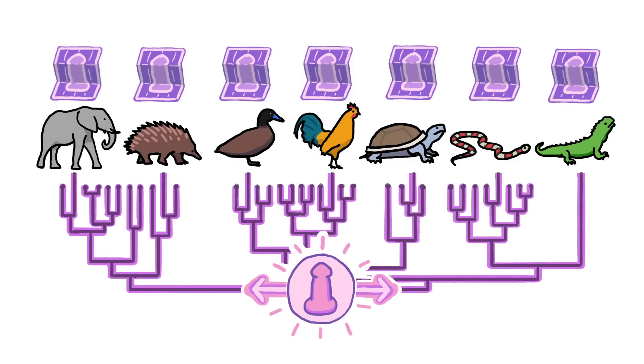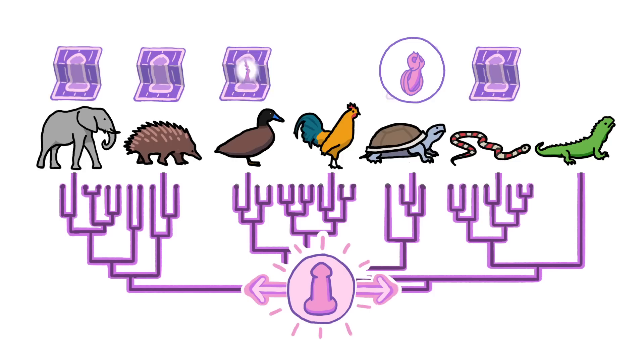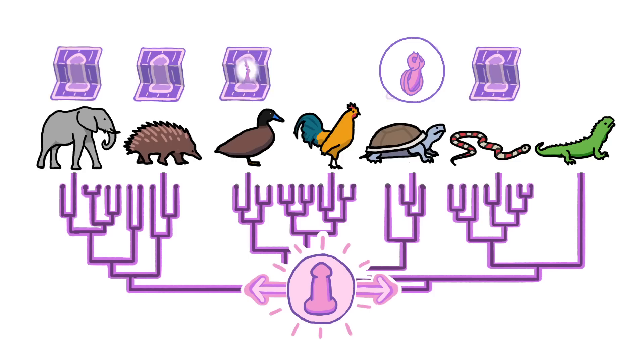That nub was powerful proof of a common penis genesis in amniotes. One ancestor passed along to all of us the same penis-building blueprint. From there, some animals forfeited their phalluses, while others took the basic plan and fleshed it out.